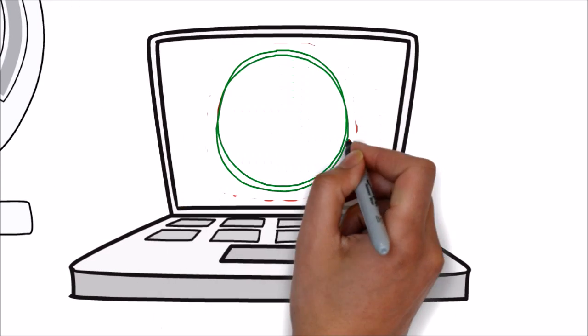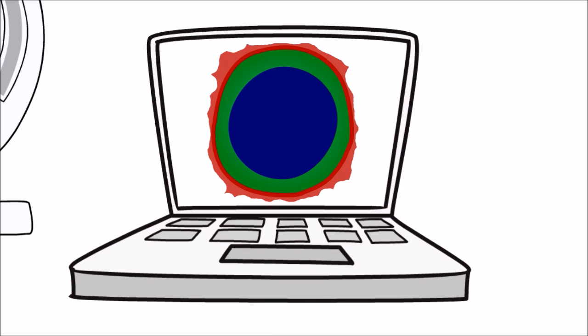The computer produces a three-dimensional image of the cell that displays the cell membrane in green, the cell nucleus in blue, and the essential oil in red.